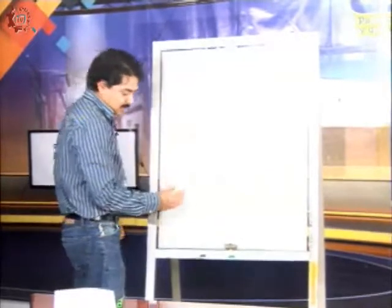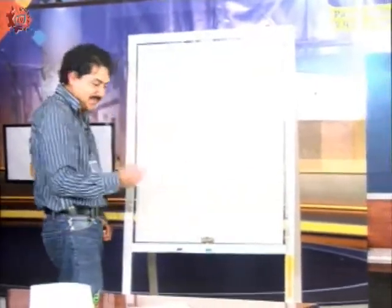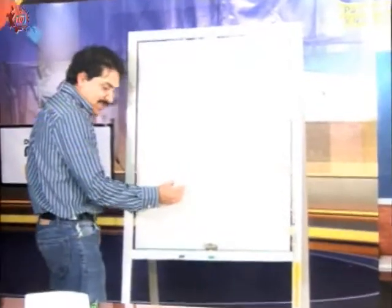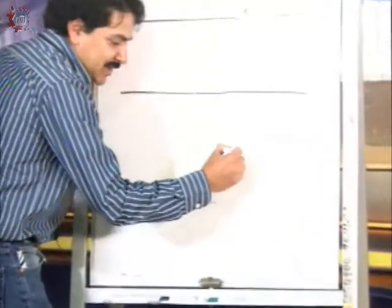Dos ángulos que si los juntamos en el mismo vértice suman 180 grados les vamos a llamar ángulos suplementarios.